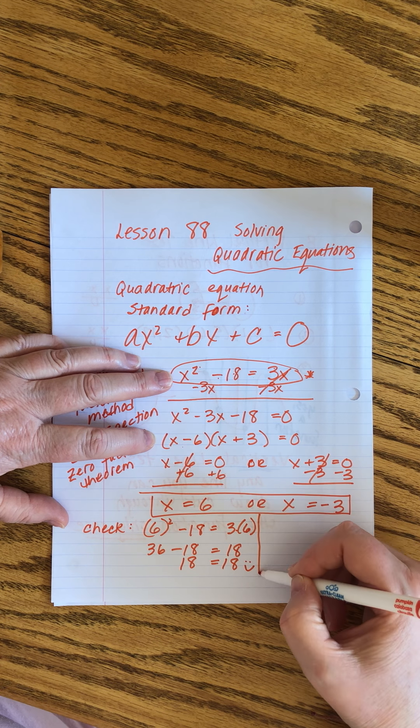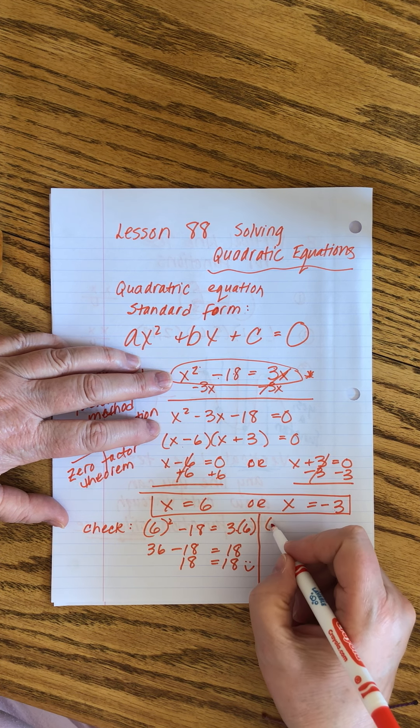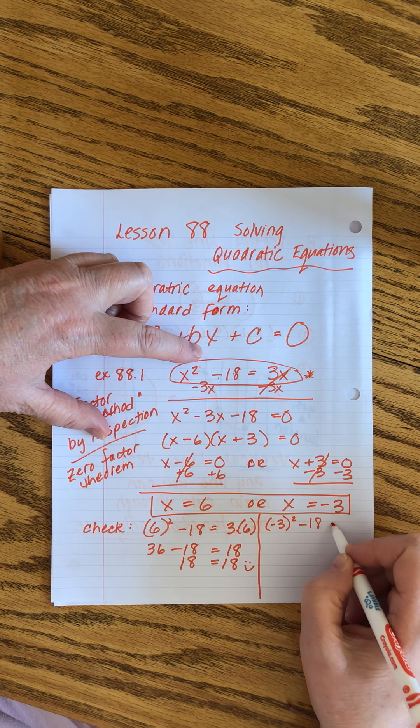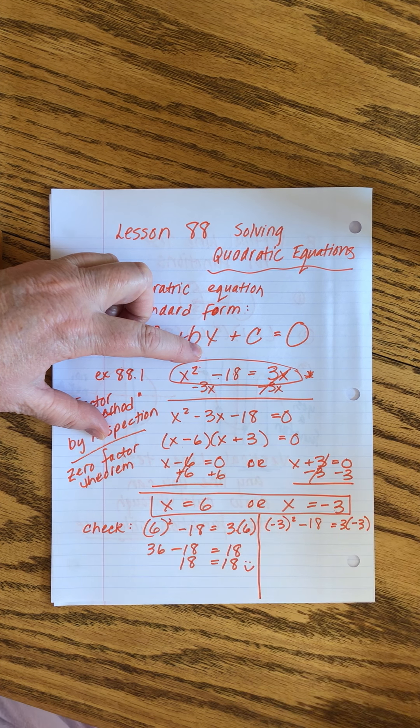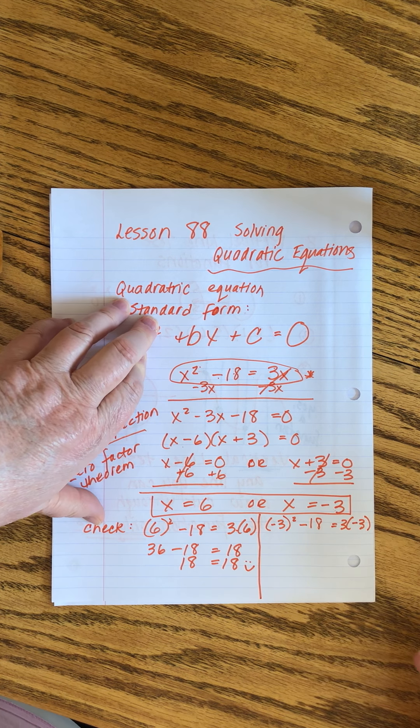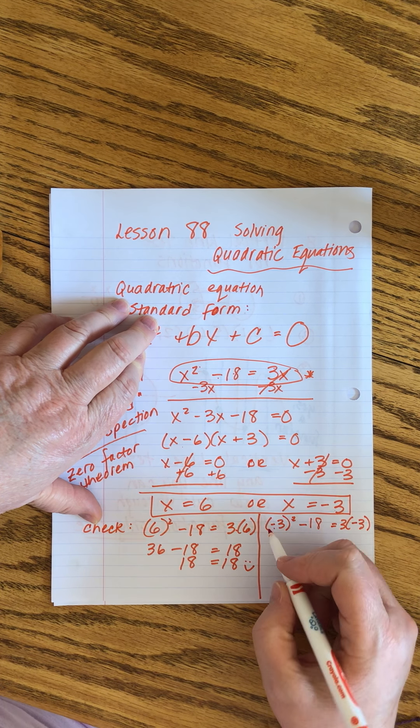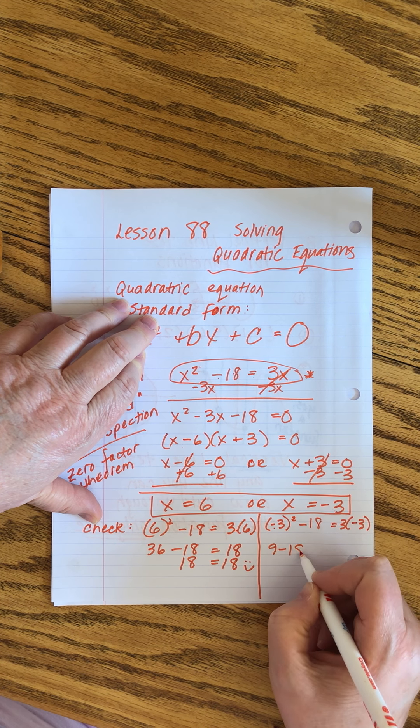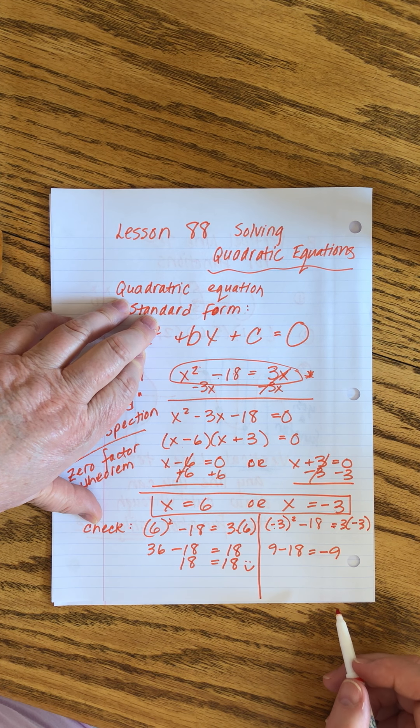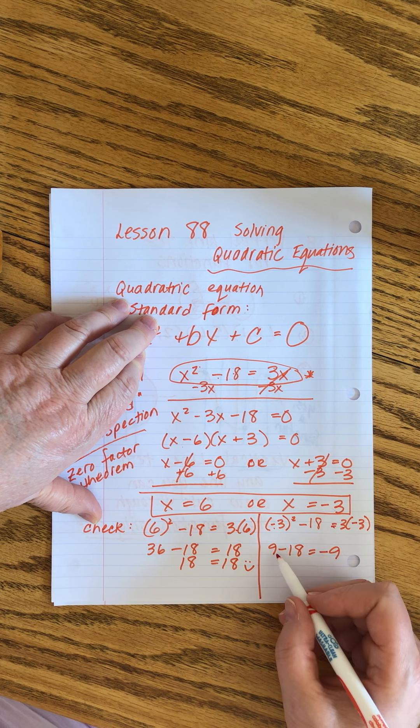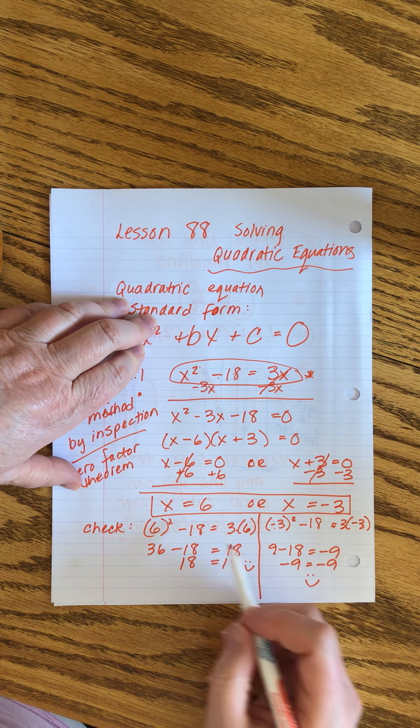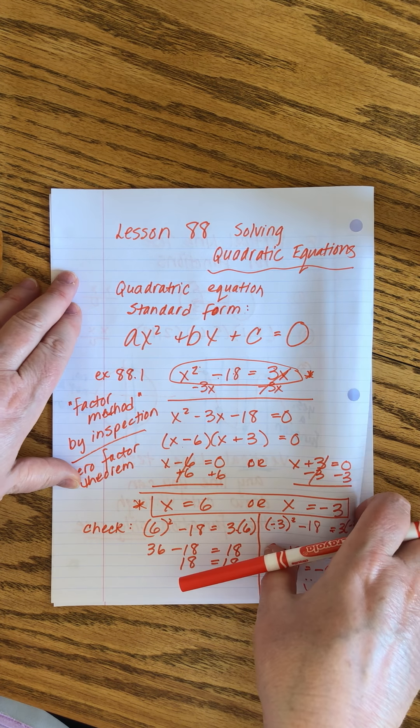Now I can check this answer. Minus 3. I'm plugging minus 3 into that same original expression. Minus 3 squared minus 18 equals 3 times minus 3. Minus 3 squared, that's 9. 9 minus 18 equals minus 9. Does it equal minus 9? Yes. Our answers checked out.